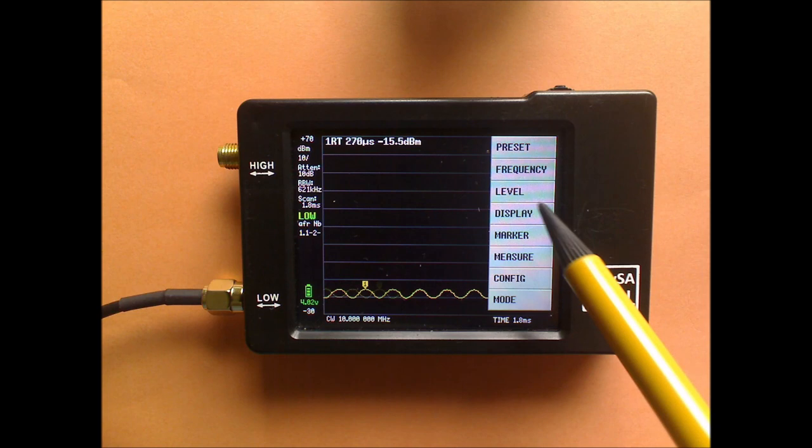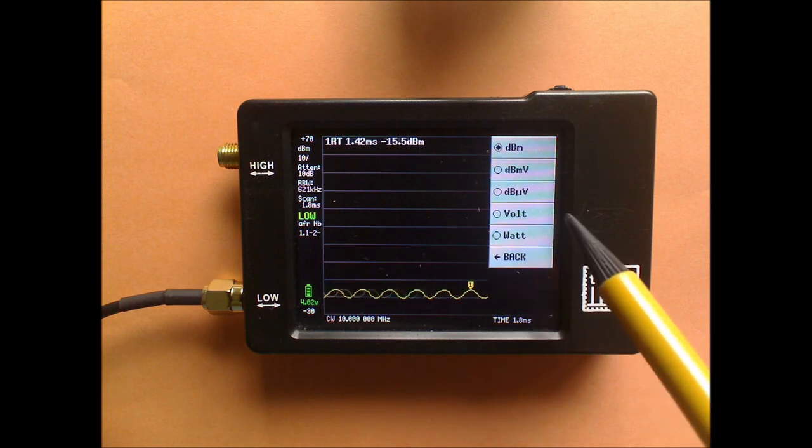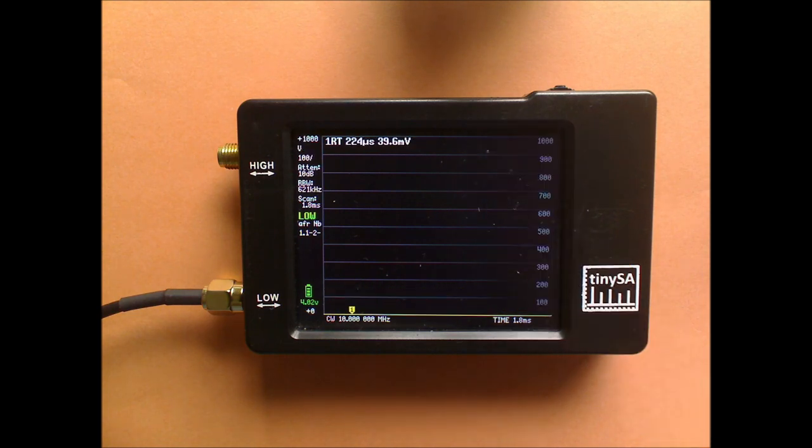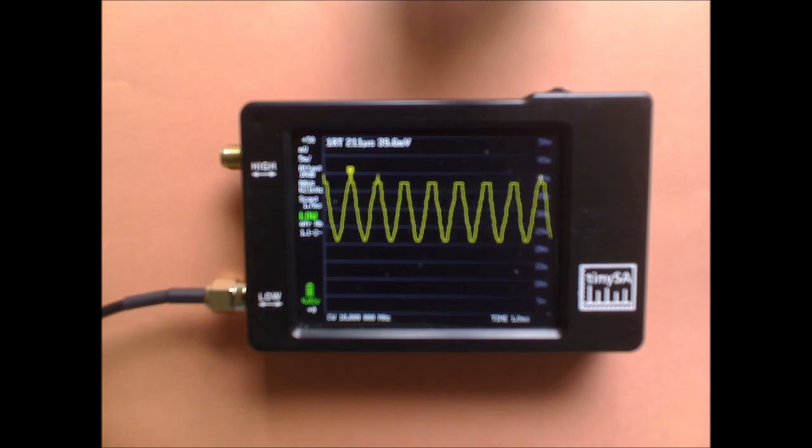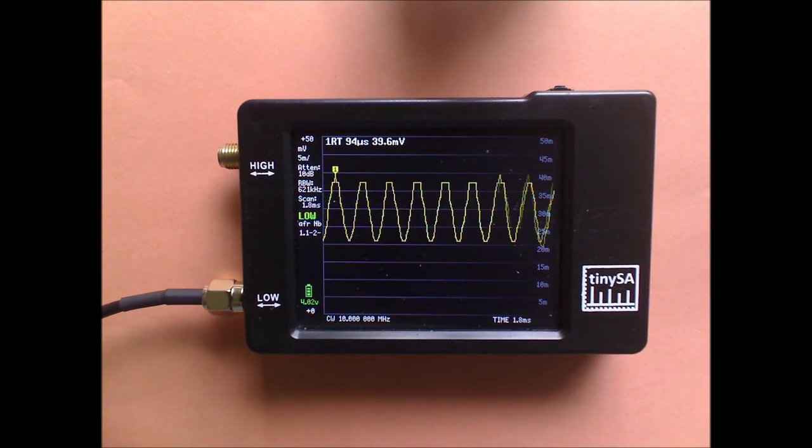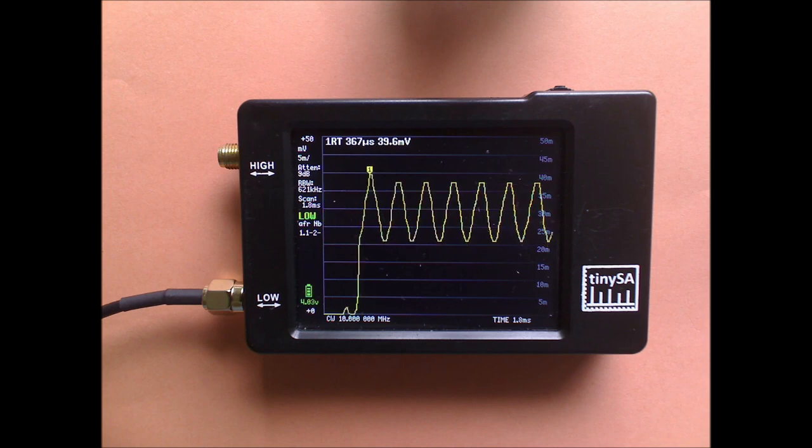And for that, I go to level, unit and I select volt. And now I have a display which gives me the volts just like an oscilloscope of the modulated signal.